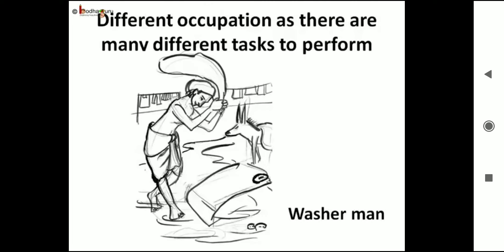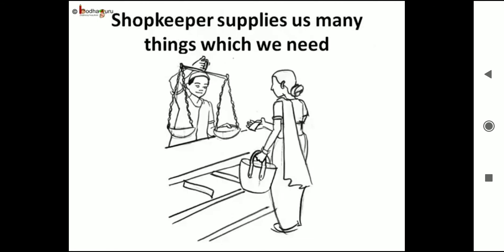The washer man cleans our clothes for earning money. Thus people choose different occupations because there are many tasks through which people can earn livelihood. People of every occupation help us. The shopkeeper supplies us many things we need in our daily life like fruits, vegetables, wheat, and rice.